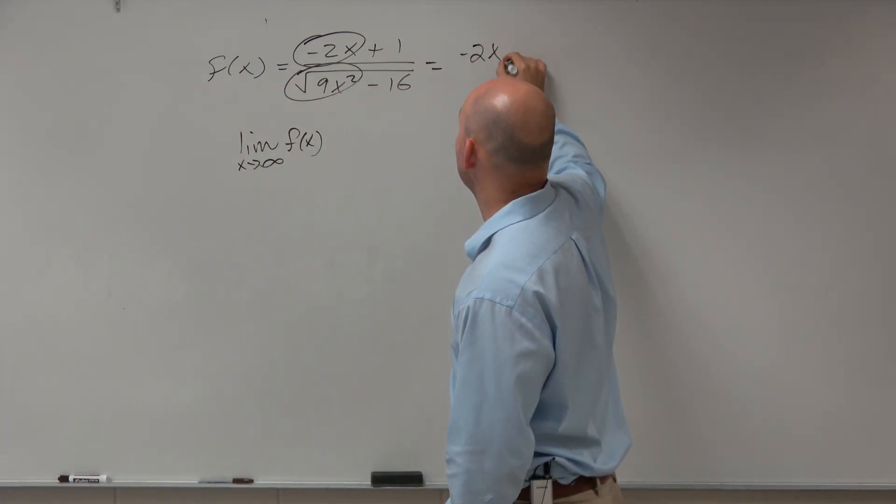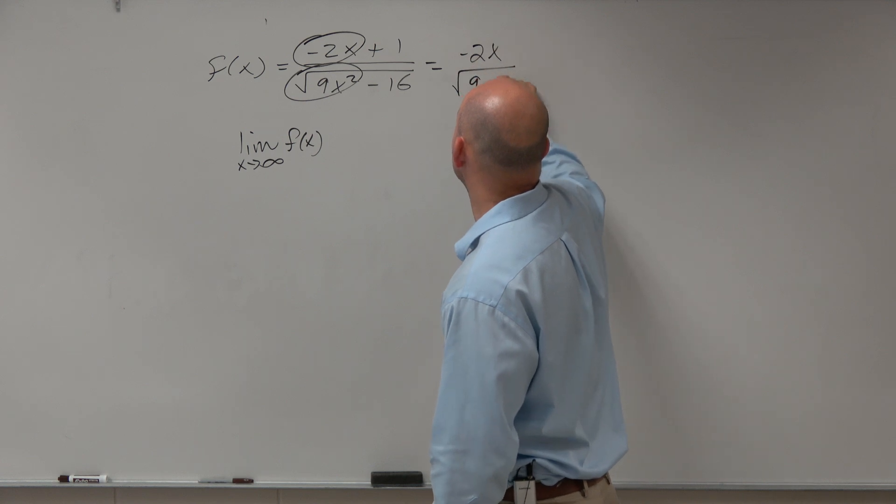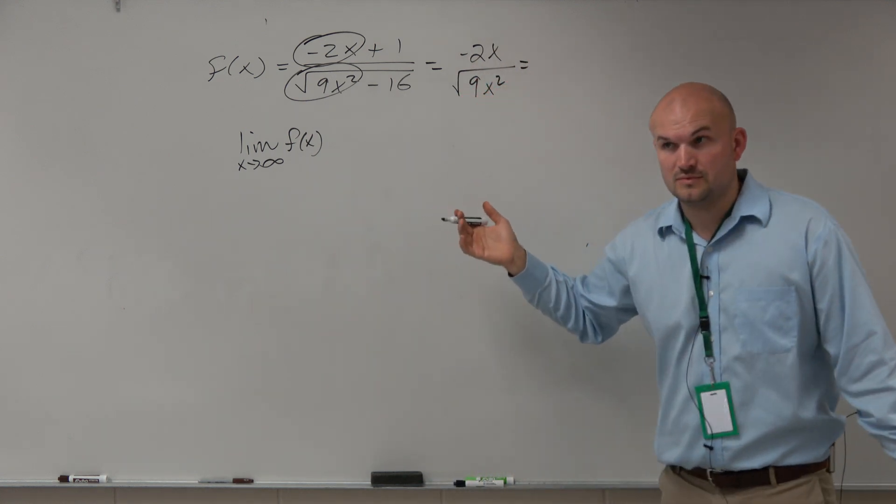In this case, we're going to have negative 2x over the square root of 9x squared, right?